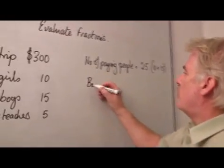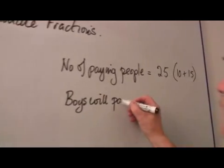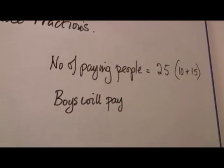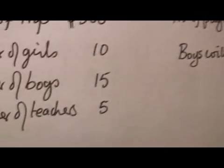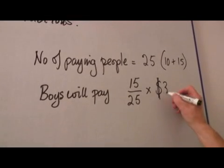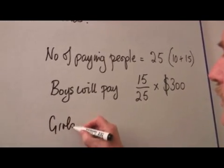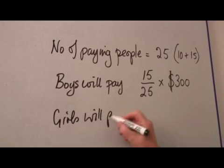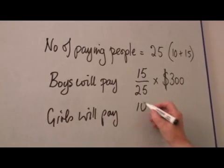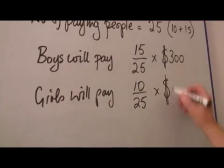Well, the boys will pay, there are 15 of them. So 15 25ths of the $300. And the girls will pay 10 25ths of the $300.